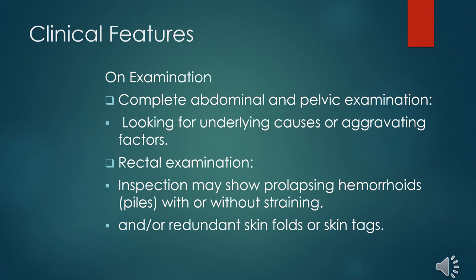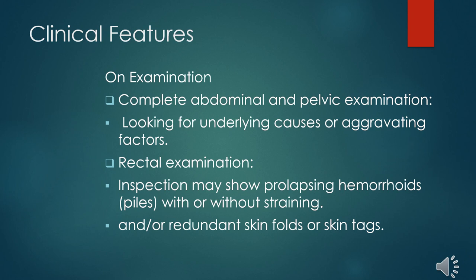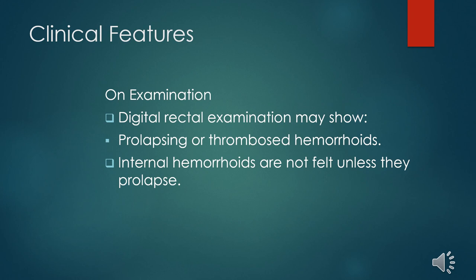When we do a rectal examination, we start with inspection. For grade three and four, the hemorrhoids will be obviously prolapsed. For grade two, ask the patient to strain and you will be able to see the hemorrhoids prolapse and then spontaneously reduce. Those who have had hemorrhoids for some time will show redundant tissue folds or skin tags around the anal region. On digital rectal examination, it may show a prolapsed or thrombosed hemorrhoid. Internal hemorrhoids are not felt unless they are prolapsed, so grade one cannot be felt, but grade two to four can be felt on digital rectal examination.